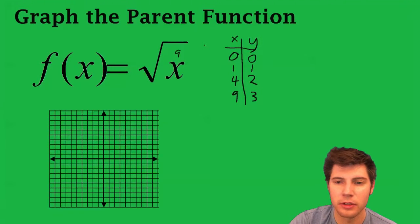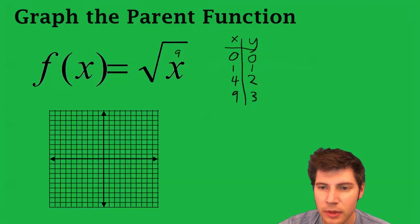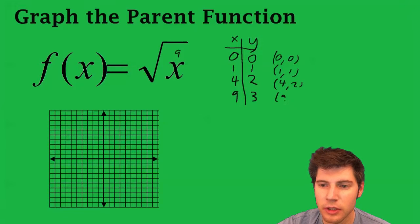So now we have some points: (0, 0), (1, 1), (4, 2), and (9, 3).